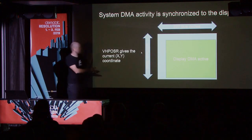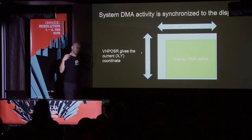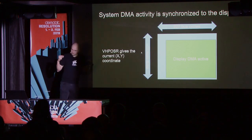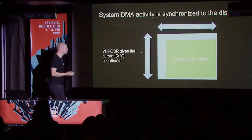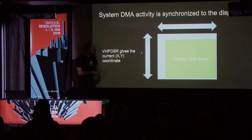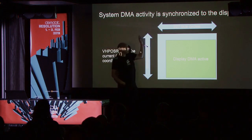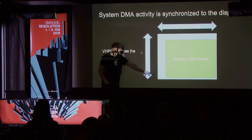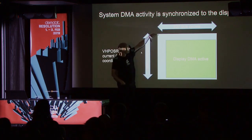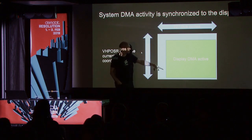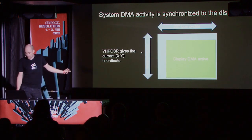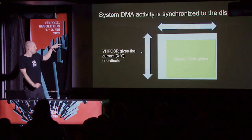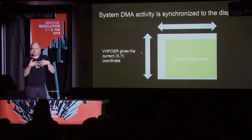One more thing to keep in mind: all DMA in the system is coordinated based on a coordinate system that maps to the display — similar to pretty much all 8 and 16-bit machines. We have 227 cycles in a line and 312 scan lines. There's not a lot of system DMA going on in the first couple of lines. It's really where the display DMA kicks in that you'll see a lot of system DMA activity. There's a register in the machine you can read that tells you exactly which coordinates in this system the machine is at right now.